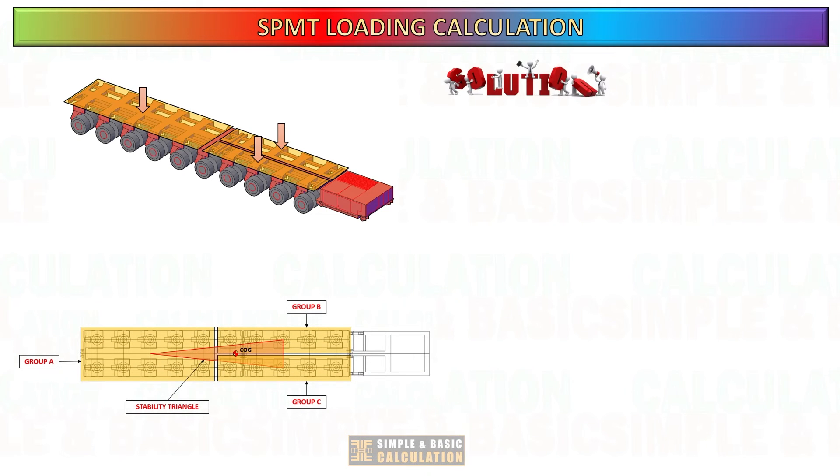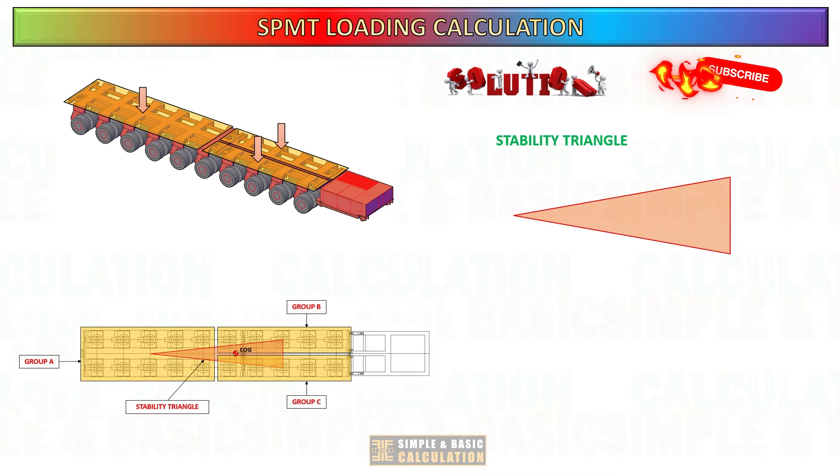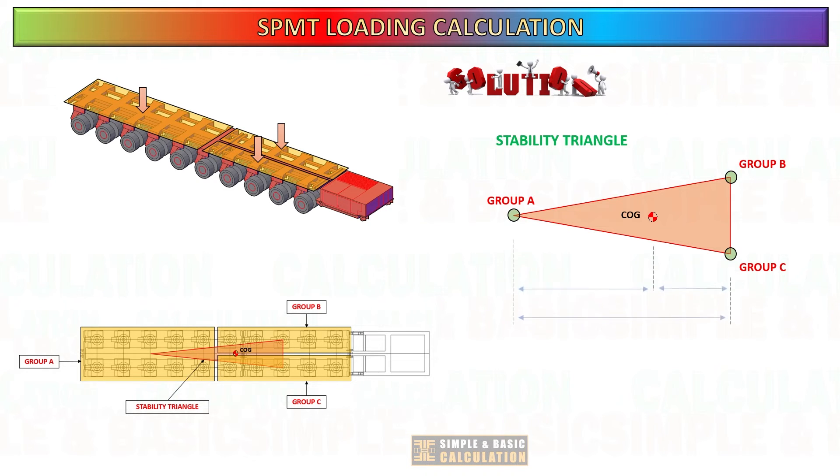Knowing the center of gravity is critically important for transportation using self-propelled modular transporters. Understanding the center of gravity allows operators to distribute the load weight evenly across the SPMT's axles. By positioning the load properly relative to the center of gravity, operators can prevent overloading of specific axles which could lead to instability and potential damage to the SPMT or the cargo. Once you determine the dimensions of the stability triangle in relation to the center of gravity of the cargo, we can start the calculation to determine the loading in each group.